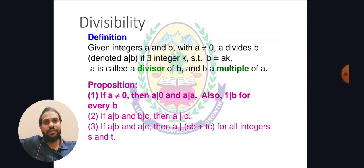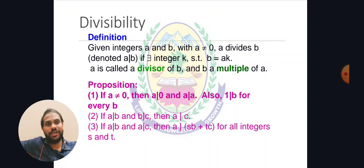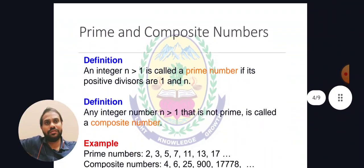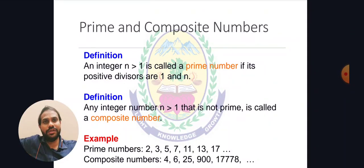Here, a is called the divisor of b and b is the multiple of a. Once the definition is satisfied, the following properties hold: if a is not equal to 0, then a divides 0, and a divides a also; 1 divides b for every b. If a divides b and b divides c, then a divides c. If a divides b and a divides c, then a divides sb plus tc, where s and t are some other integers.